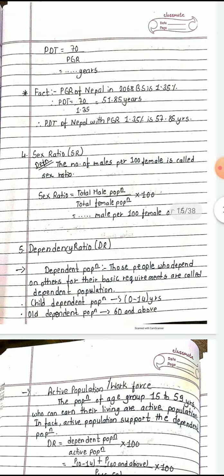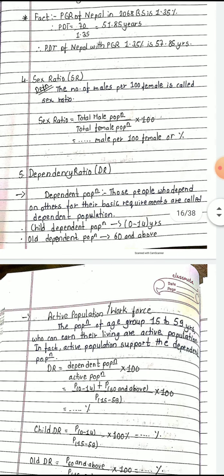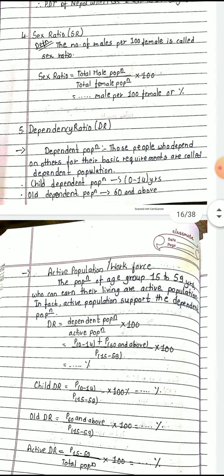Sex ratio is the number of males per 100 females. Formula: sex ratio = (total male population / total female population) × 100. Unit: males per 100 females. For example, if Nepal's sex ratio is 94, it means there are 94 males per 100 females. If sex ratio is 105, there are 105 males per 100 females.